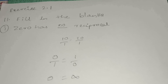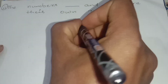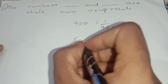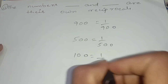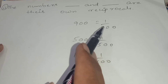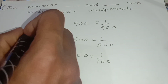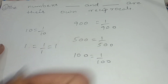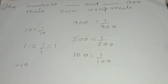The numbers dash and dash are their own reciprocals. If I take 900, its reciprocal will be 1 by 900. If I take 500, its reciprocal will be 1 by 500. For each and every number, if I keep increasing there will be a reciprocal of a different value. But if I take 1, the reciprocal is 1 by 1, which equals 1. So the reciprocal of 1 is equal to 1.